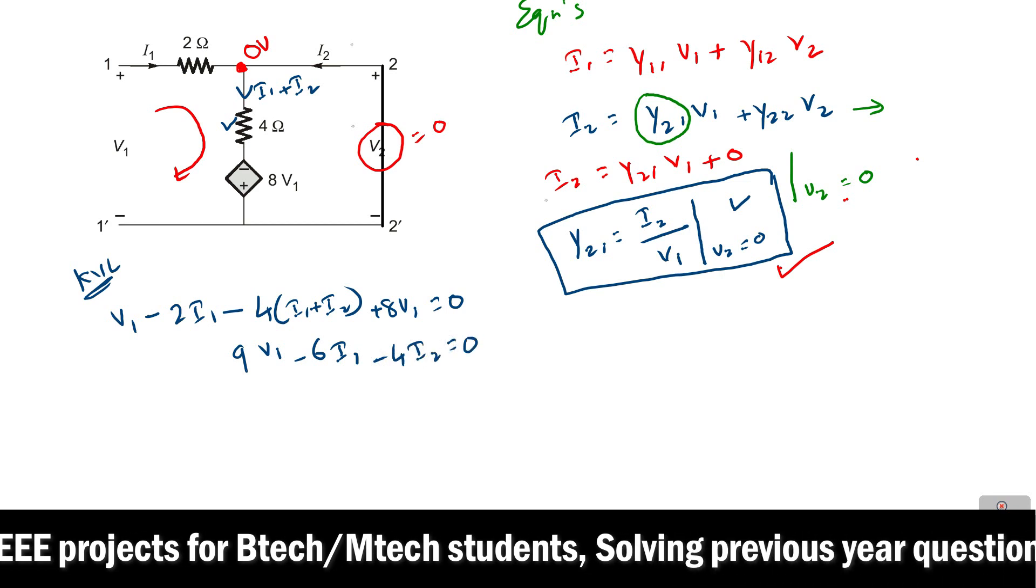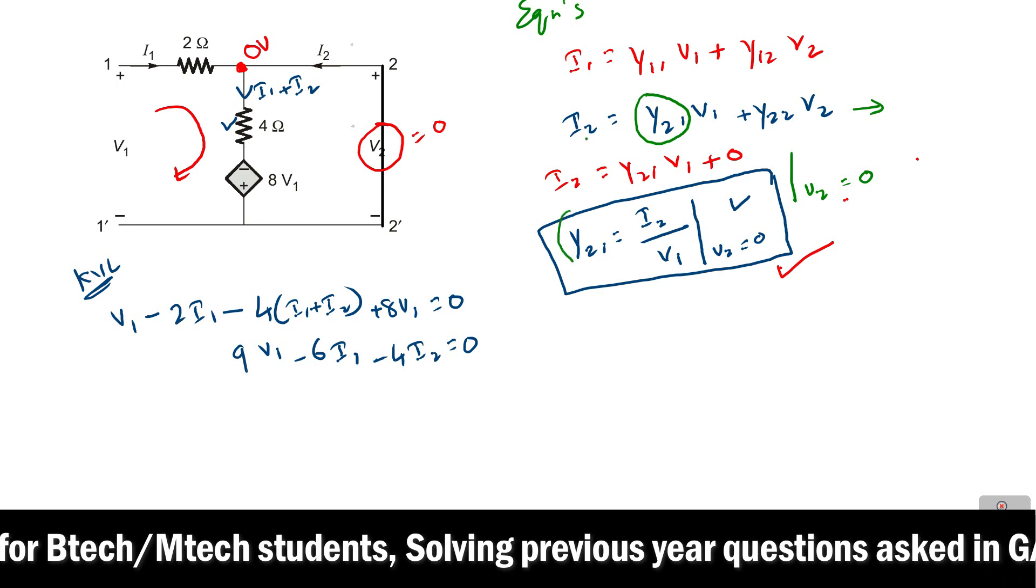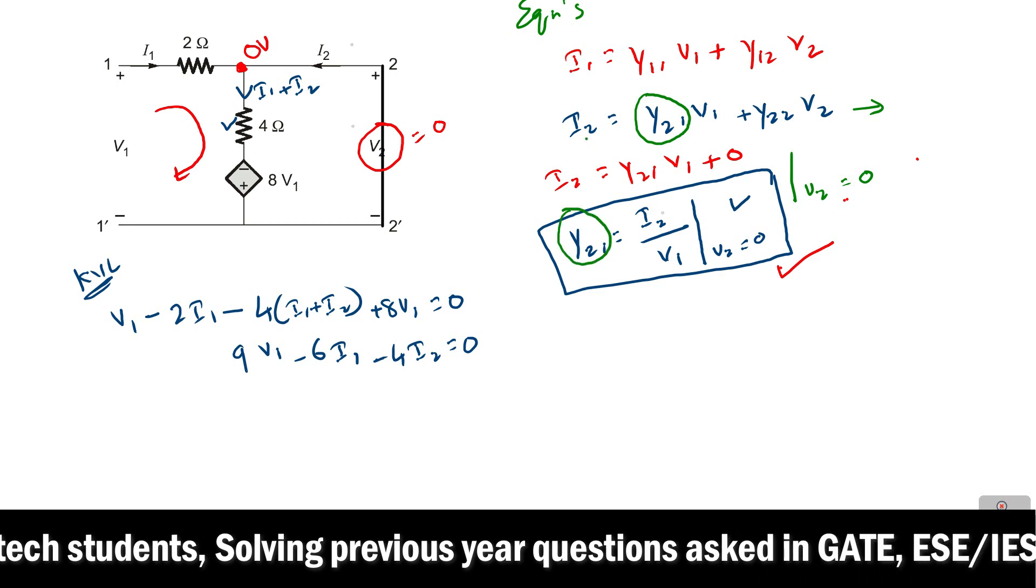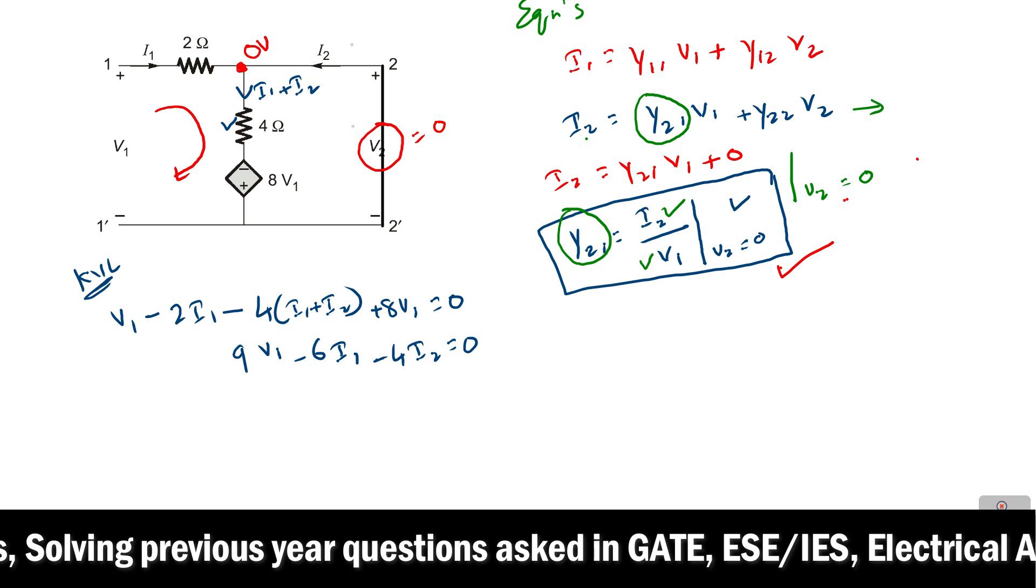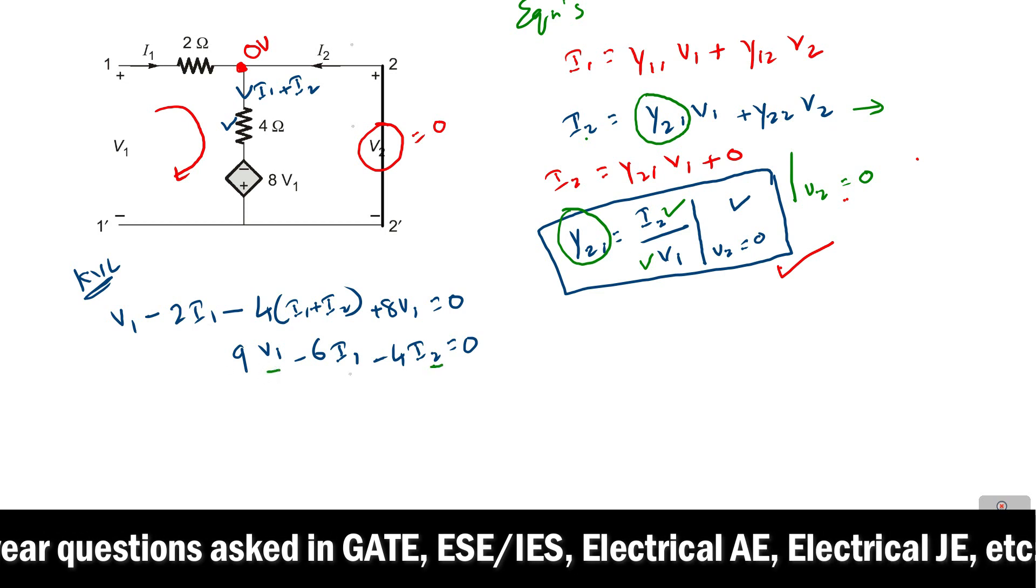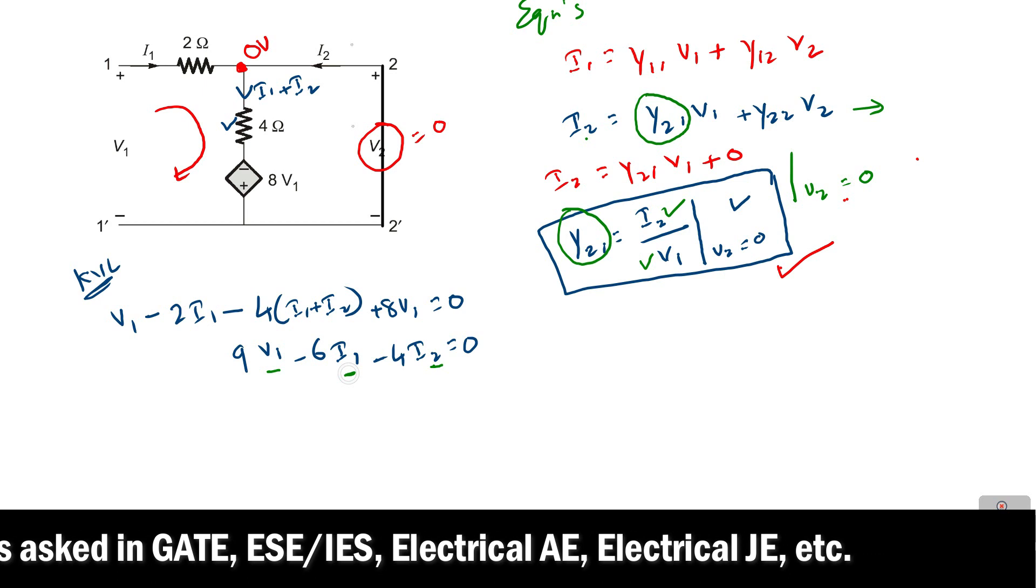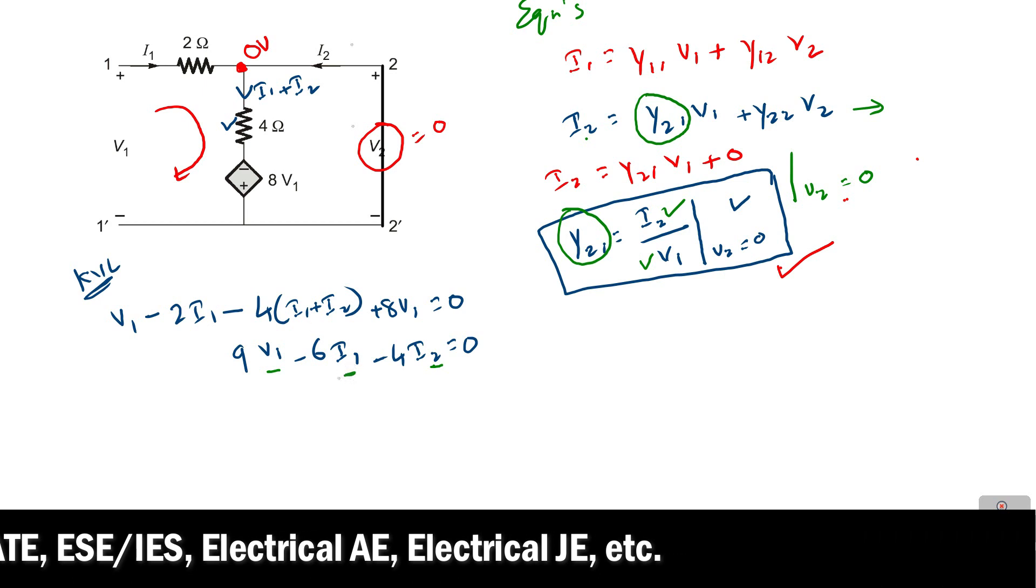Here you can observe for finding the Y21 parameter we must have i2 and v1 only, but here v1 and i2 are there but i1 also is there. But we don't want i1 here, so first of all find out the i1.